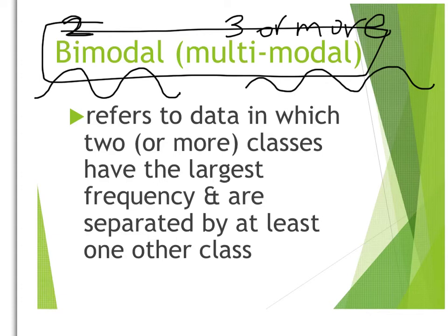An example of something that might produce a bimodal distribution is when we're taking measurements of maybe height or weight for two different genders and not separating the genders. Generally for females, you might have a mound on the lower end of weight, and for males you might have one on the higher end of weight.